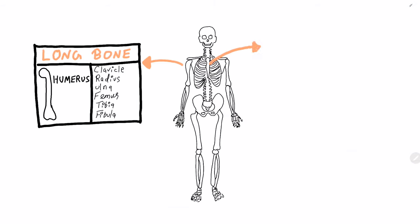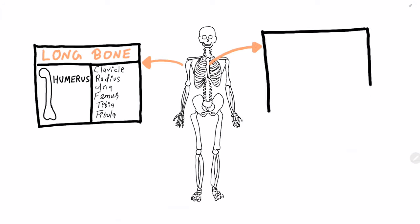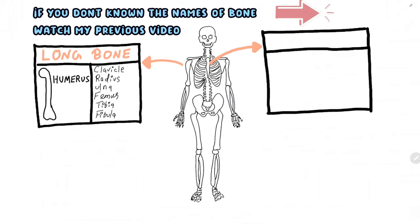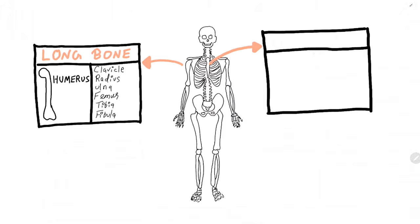Let us look at the flat bones. As the name suggests, they are flat and they lack a medullary cavity. A flat bone is typically thin and is also often curved. Some examples of flat bones are the cranial bones, scapula, the sternum, and ribs. Flat bones serve as points of attachment for muscles and often protect the internal organs.